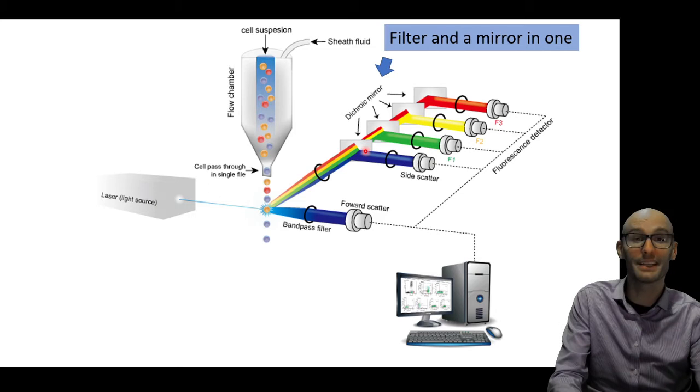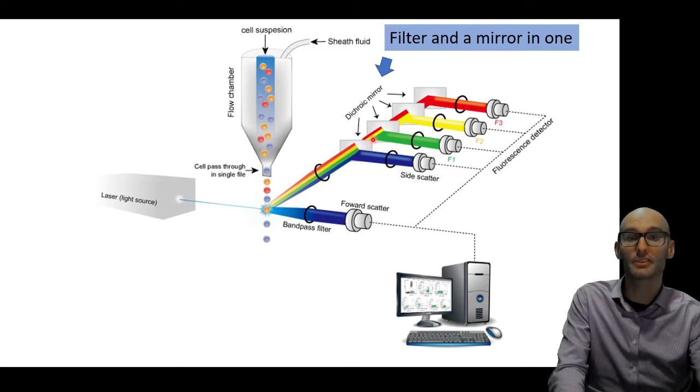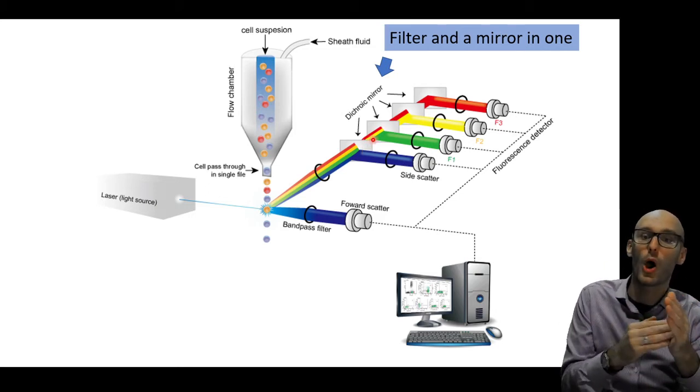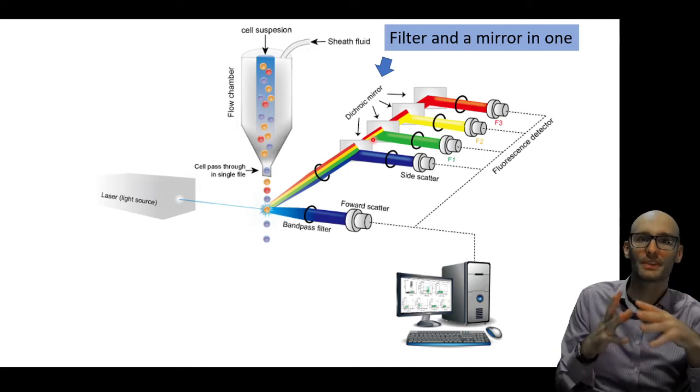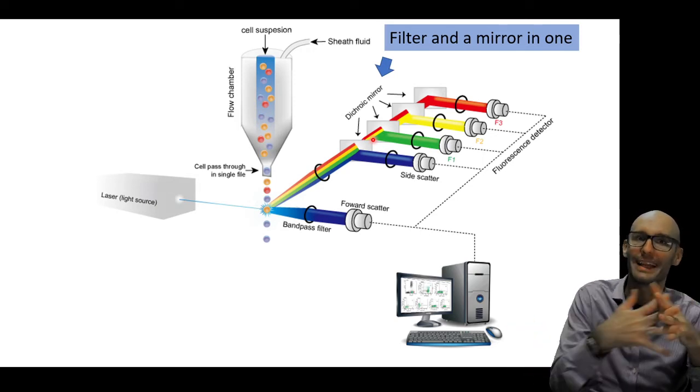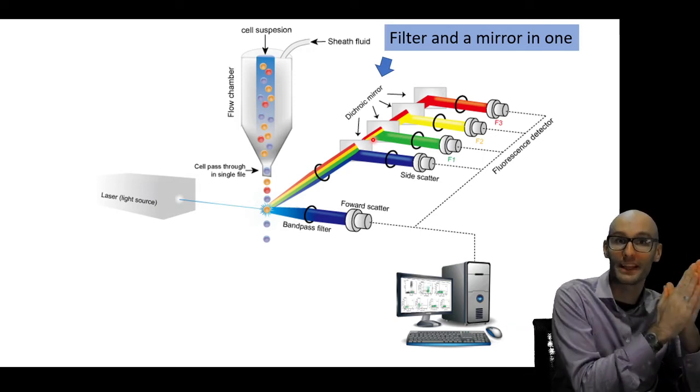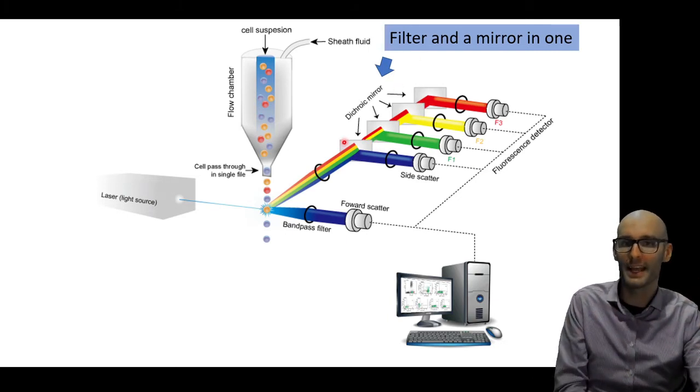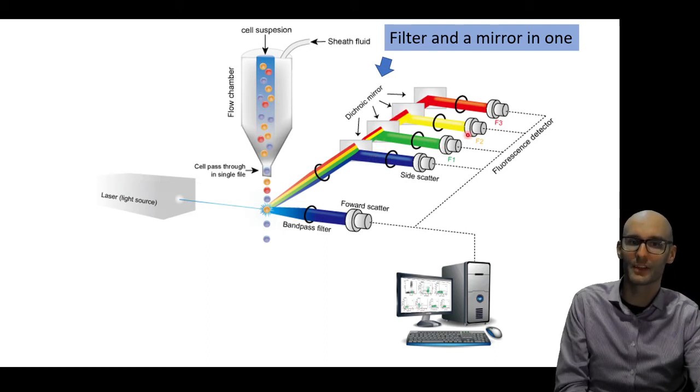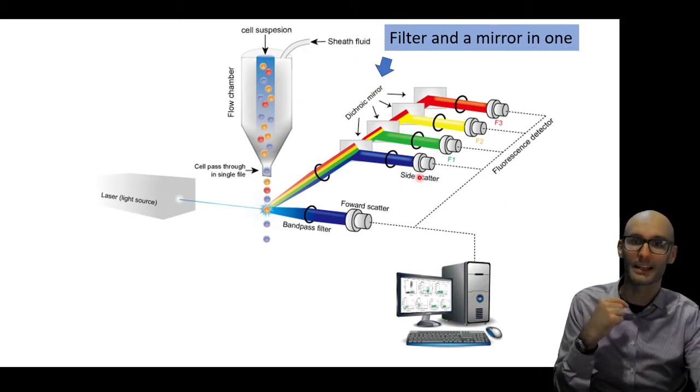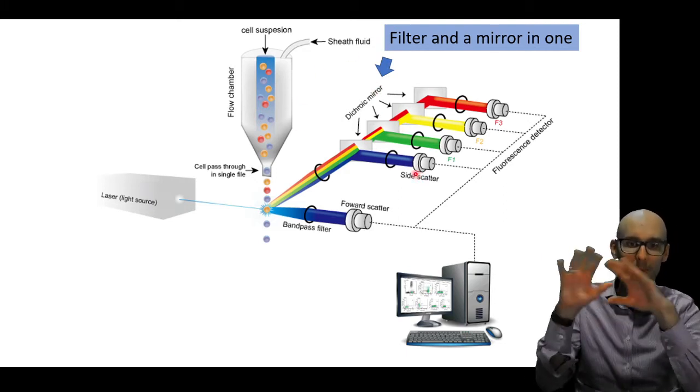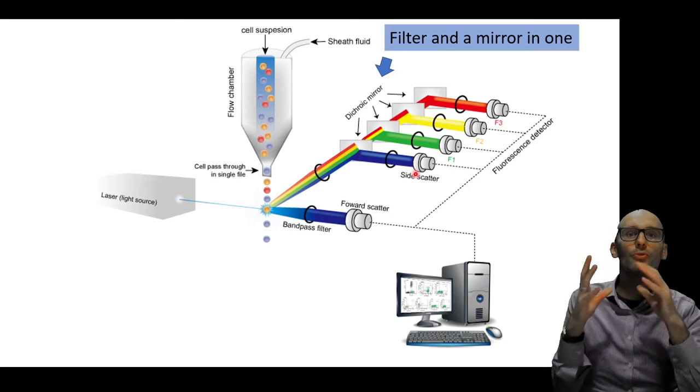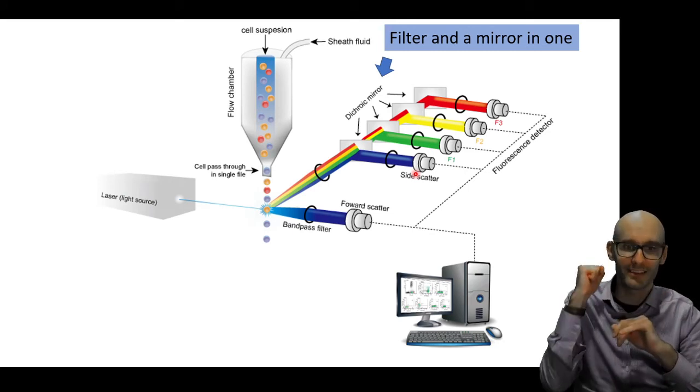Now, in the actual machine, instead of a filter, often there is a mirror, and that mirror will only reflect a specific wavelength of light, and it will let all the other wavelengths go through. So here you can see, it acts kind of like a filter and a mirror all in one. This one only reflects blue light, this one only reflects green light, this one only reflects yellow light, and it's such a clever technique that allows us to look at a number of fluorescent colors all simultaneously on a single cell.